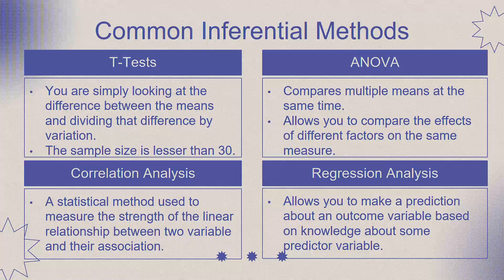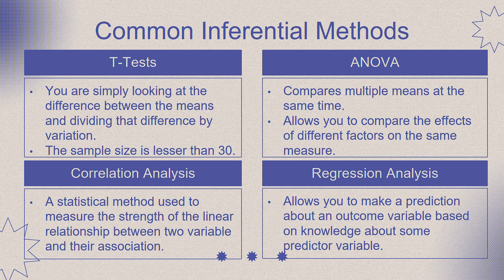Here are some common inferential methods you might apply in your study. First is the t-test, wherein you are simply looking at the difference between the means and dividing that difference by variance. The sample size of this test is less than 30, and it has different types: the one-sample t-test for comparing data to the mean of a known population; the independent sample t-test for comparing data from two separate non-related samples; and the dependent sample t-test for comparing data from related groups, most often used when you have a pre-test or post-test setup.